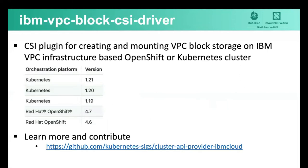The IBM VPC block CSI driver repo was moved to the Kubernetes SIGs just recently — just a couple of months ago. It provides a CSI plugin for creating and mounting VPC block storage for applications running on Kubernetes or OpenShift clusters on IBM VPC infrastructure. It currently supports Kubernetes versions 1.21, 1.20, and 1.19, and for OpenShift it supports 4.7 and 4.6. We have good documentation on how to deploy the plugin, and we use it in production ourselves. Contribute if you can.